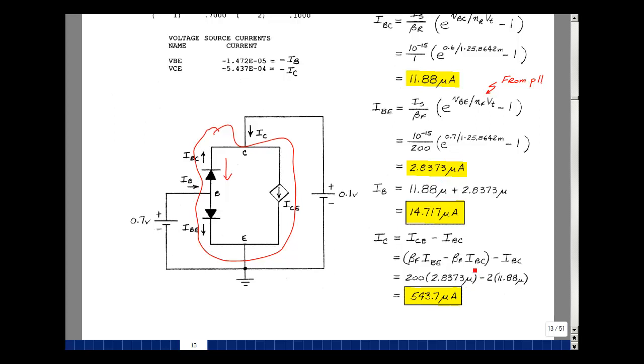And then I have I sub bc times beta r and I sub bc times 1, but beta r was 1. So that's multiplying that current by 2, and I get 543.7 microamps. That's exactly the term right over here in scientific notation versus engineering notation.